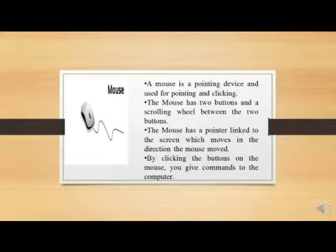Mouse: A mouse is a pointing device used for pointing and clicking. The mouse has two buttons and a scrolling wheel between the two buttons. The mouse has a pointer linked to the screen which moves in the direction the mouse moves. By clicking the buttons on the mouse, you give commands to the computer.